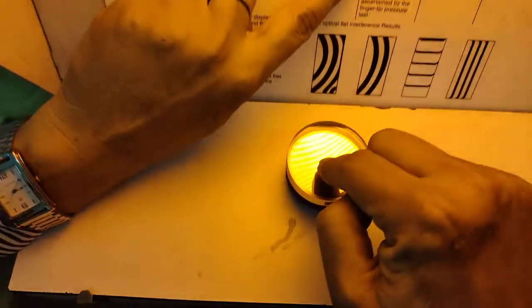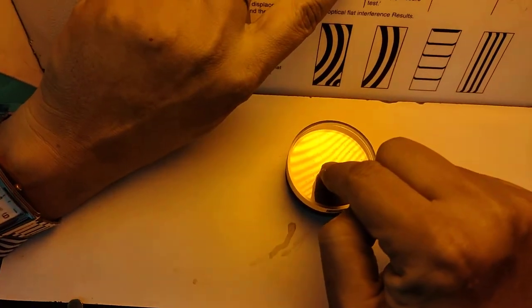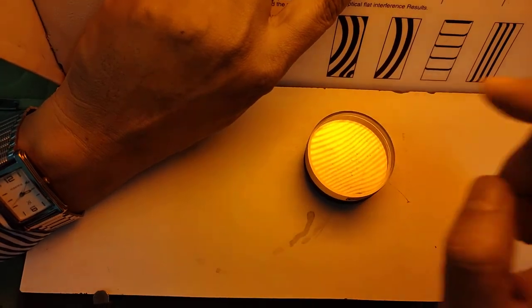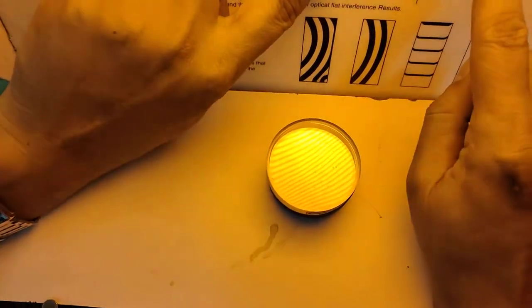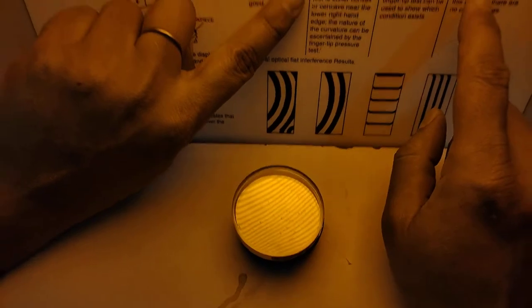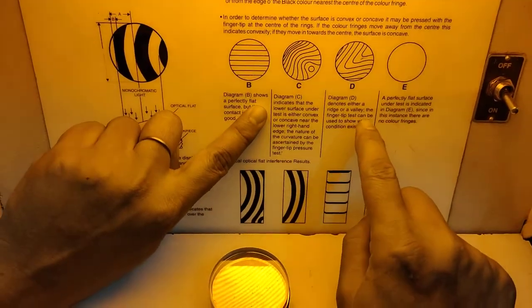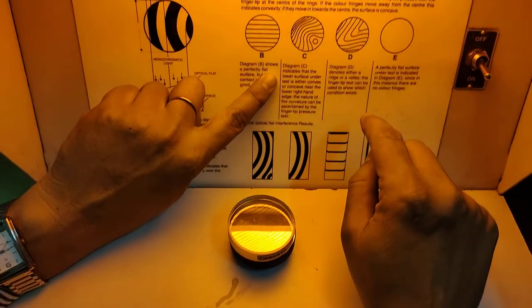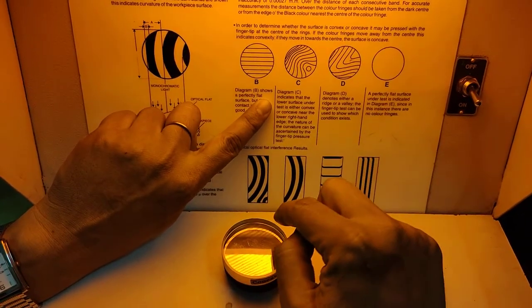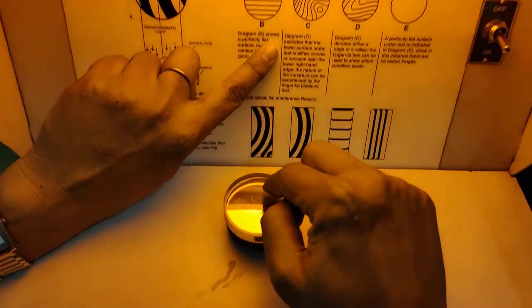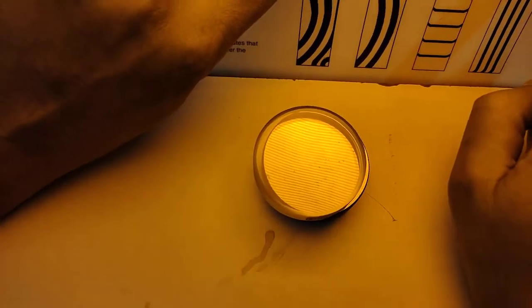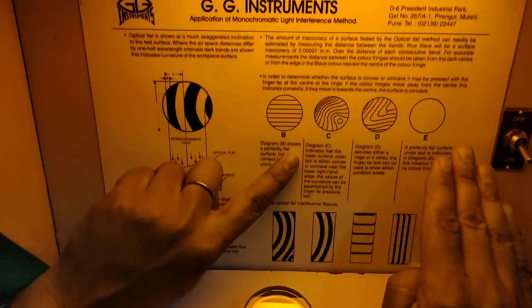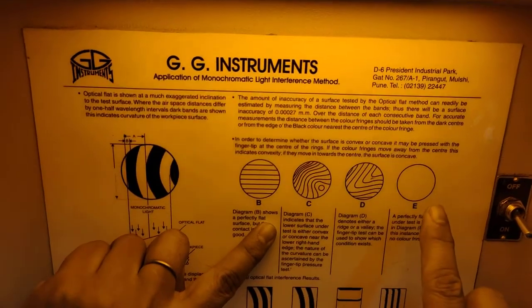See, if I am putting pressure, see the fringes. Now I am removing this. Then diagram D indicates either a ridge or a valley. The fingertip test can be used to show which condition exists. The last is perfectly flat, meaning absolutely flat surface where we are not going to see any kind of fringe.